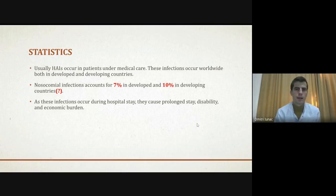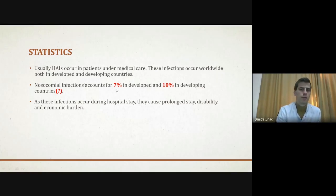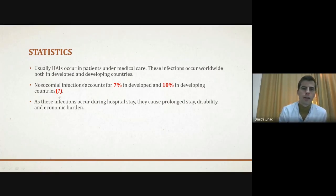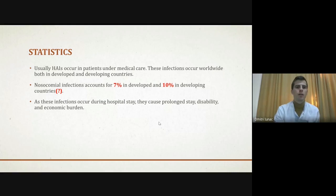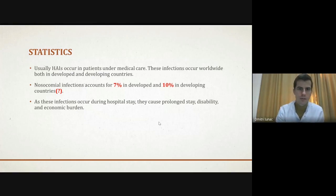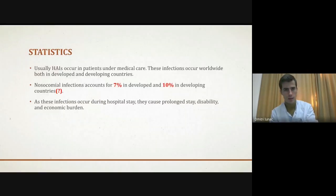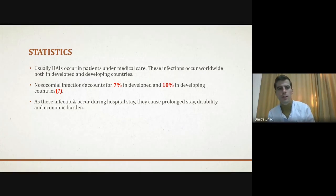Regarding statistics, some studies report about 7% of nosocomial infections in developed countries and about 10% in developing countries, so rich countries tend to have lower incidence. About five years ago in Moldova, the declared percentage of nosocomial infections was zero percent.